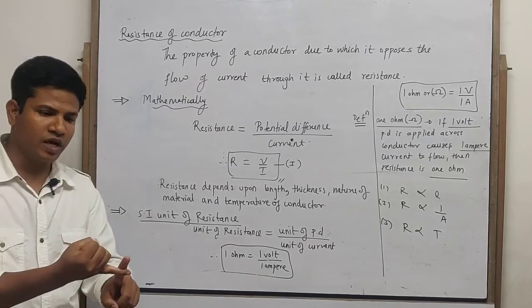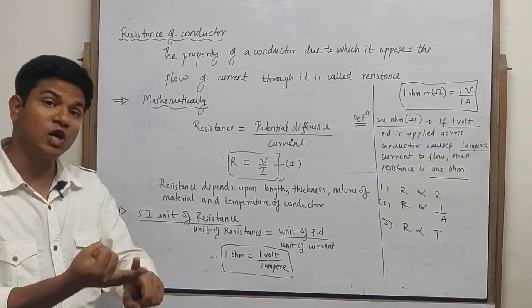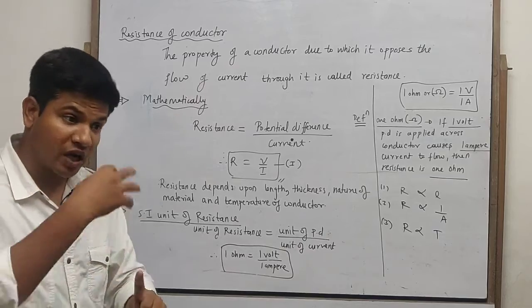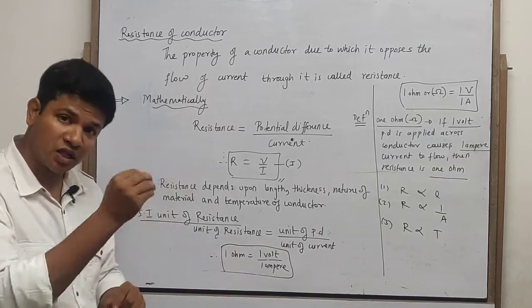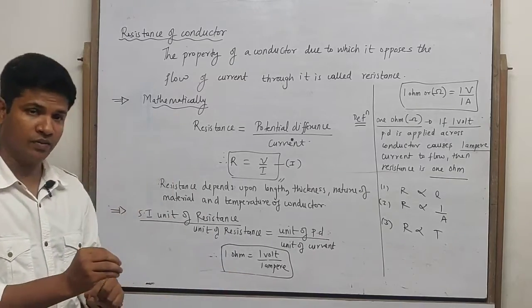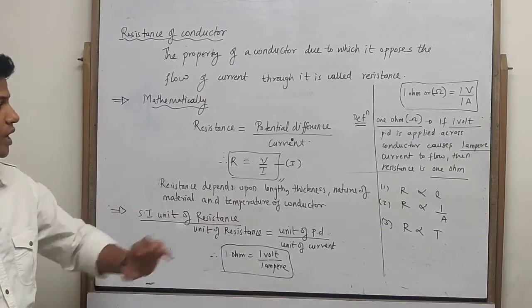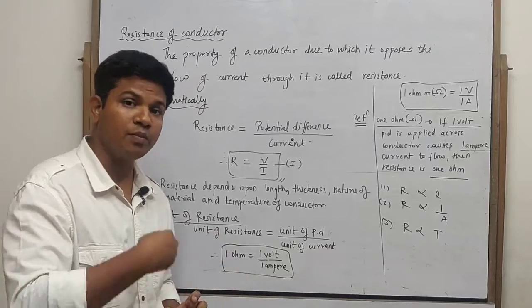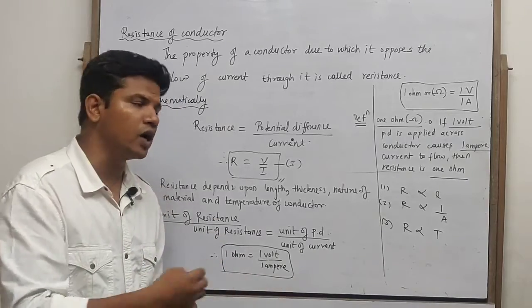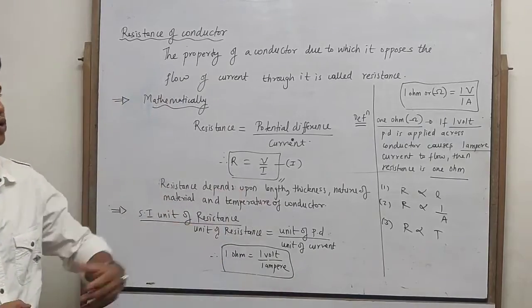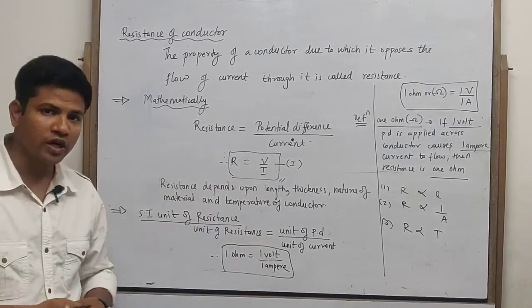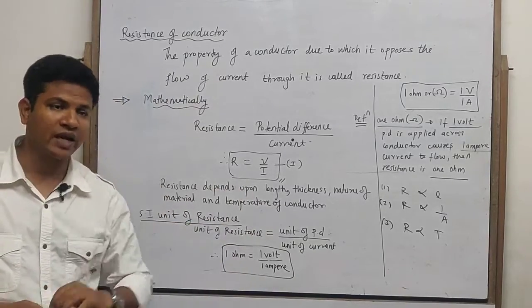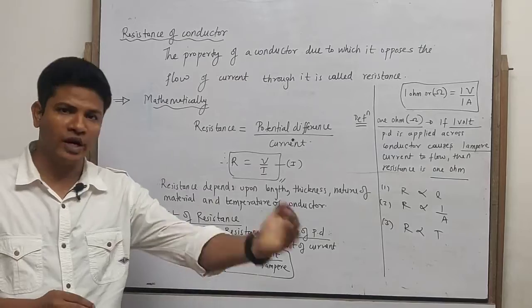Resistance R = V/I depends on four factors: length of the conductor, area of cross-section, nature or material of the conductor, and temperature of the conductor. How it depends on each will be discussed.